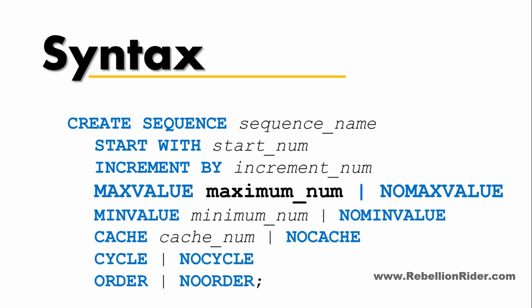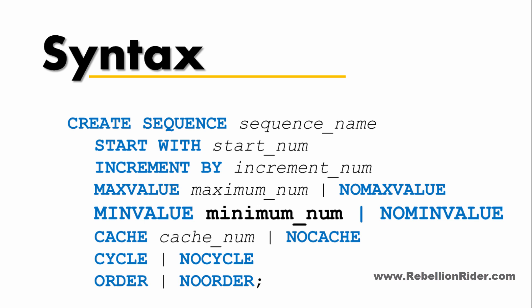Similar to MAXVALUE we have the MINVALUE attribute to set the lower bound of our sequence. As a value this attribute also accepts a numeric value and should be less than or equal to START WITH, as well as less than MAXVALUE. In case you don't want to set the lower bound for your sequence then you can use the NO MINVALUE attribute instead.